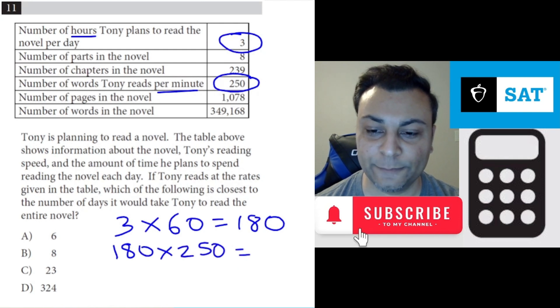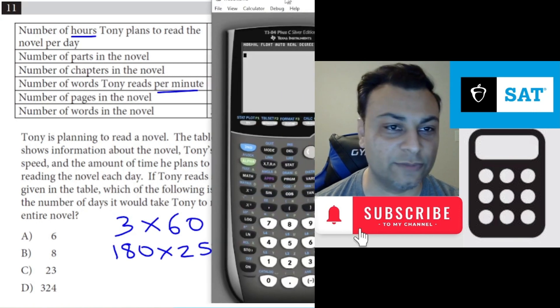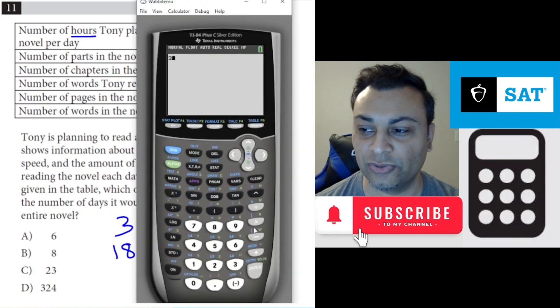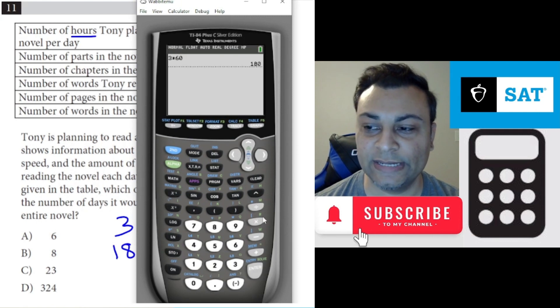Let's get the calculator for that. I'll do the calculator for three times 60 as well, just to show you where I got that from. It's 180 and then 180 times 250. It's 45,000.